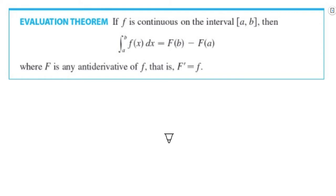Formally: if we take the antiderivative — with this integration symbol, boundaries from point a to point b on a closed interval — when we integrate we take the antiderivative's value at the upper limit and subtract the antiderivative's function value at the lower limit. That gives us the area under the curve.